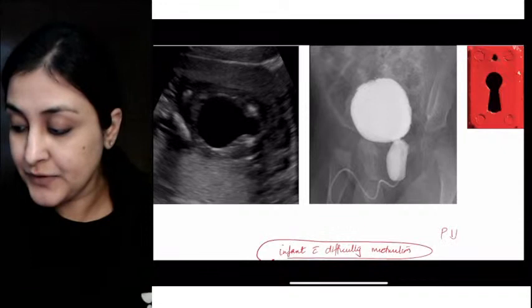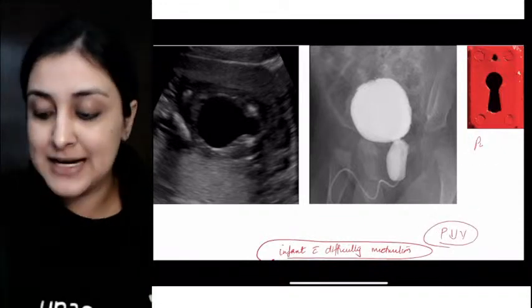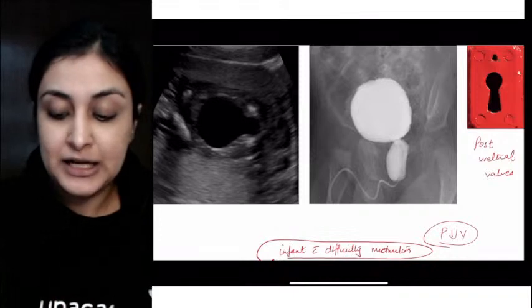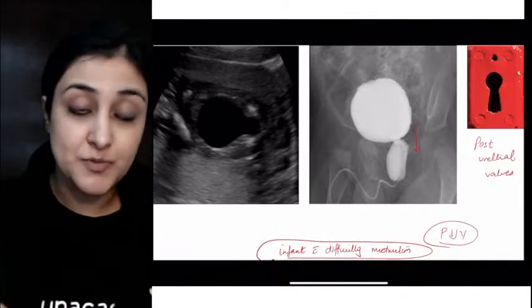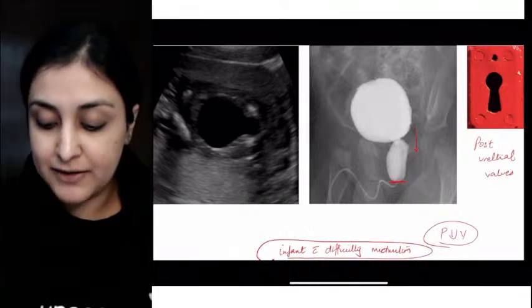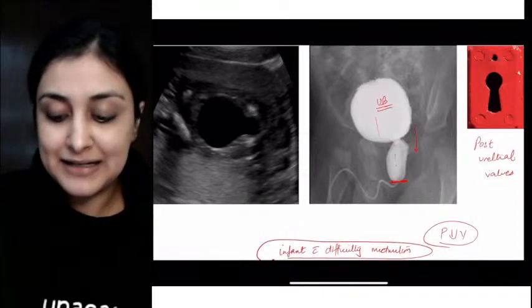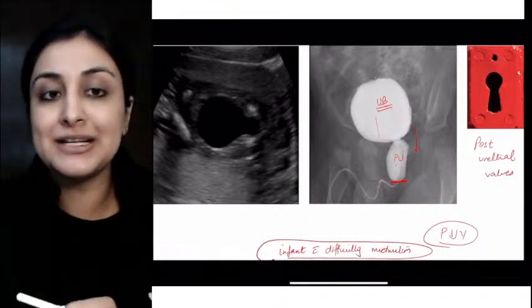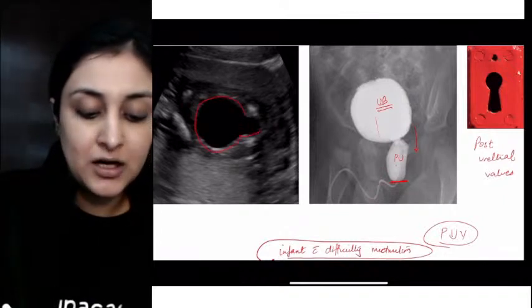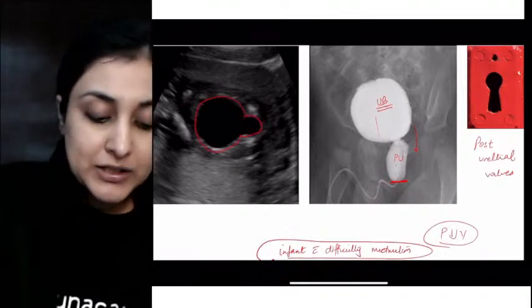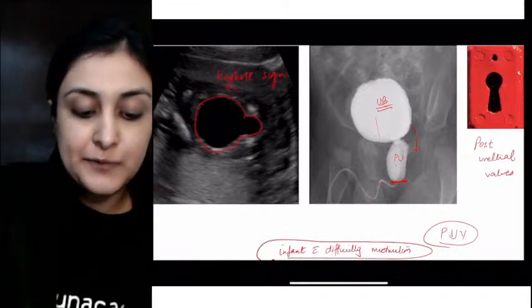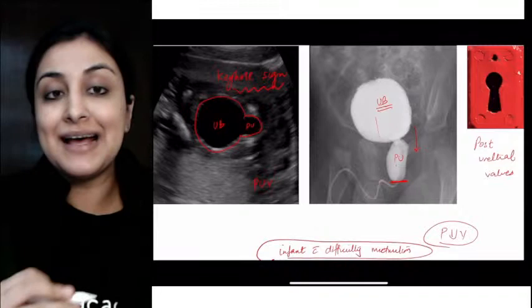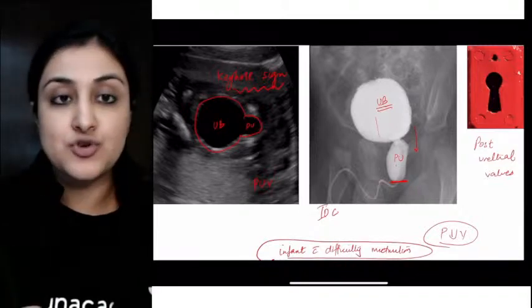Posterior urethral valves means there are these one-way valves which stop the flow of urine from going from top to bottom. So what will happen? There will be obstruction. Do you agree if there are valves here? The urinary bladder will be dilated. Posterior urethra will be dilated. And then I will see this tapering. This can be picked up on antenatal ultrasound. This is an antenatal ultrasound showing a keyhole sign. Do you see the similarity with a keyhole? This is called a keyhole sign in posterior urethral valves wherein you see the urinary bladder and posterior urethra being dilated.